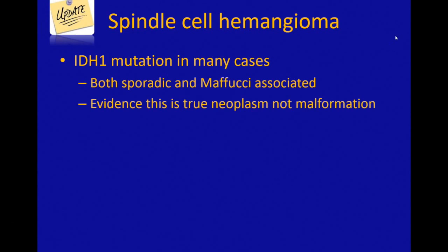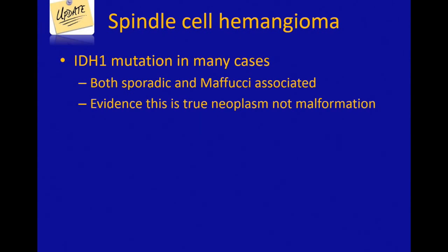Recently, Alex Lazar from MD Anderson and a large group described that IDH1 and IDH2 genes are often mutated in spindle cell hemangioma, both in sporadic cases and Maffucci-associated cases. There was some debate about whether spindle cell hemangioma was actually a malformation, but now, because of this mutation, that's pretty solid evidence that we're dealing with a true neoplasm. I don't use this routinely to test, but it's an interesting scientific finding.